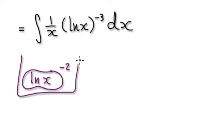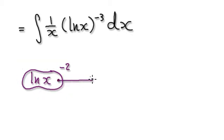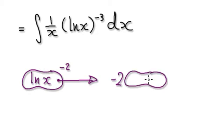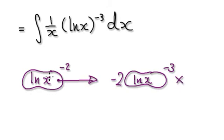When you differentiate this initial guess, it will give you this. Differentiate this — it will give you this. This goes down, so it will be negative two. The bubble stays intact, and then this thing here gets minused by one. And you've got to times by the derivative of the bubble itself, which will be one over x.